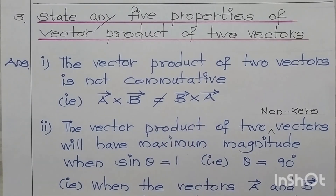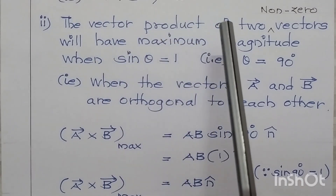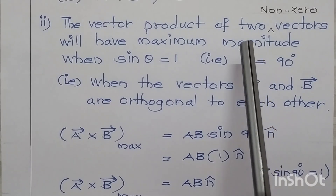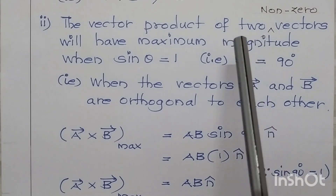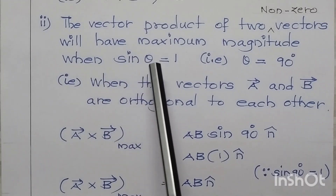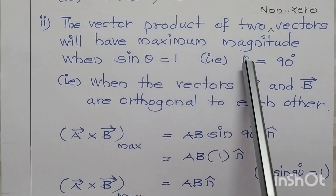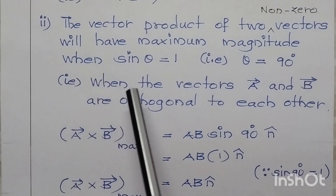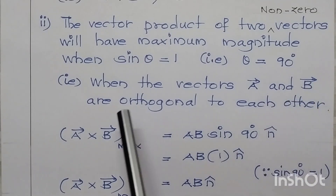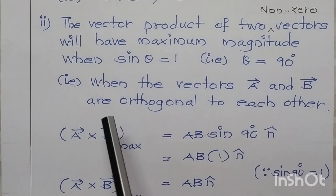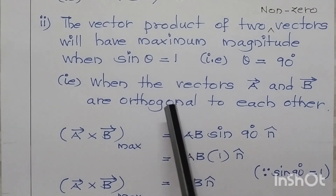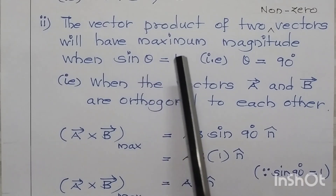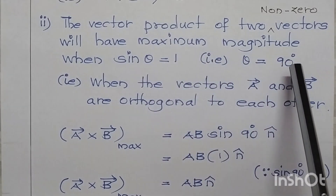Second property: the vector product of two non-zero vectors will have maximum magnitude when sin theta is equal to 1, that is, when theta is equal to 90 degrees. That is, when vectors A and B are orthogonal to each other — meaning perpendicular to one another. The sin theta becomes 1 if and only if theta equals 90 degrees.